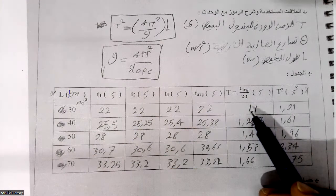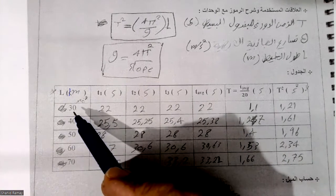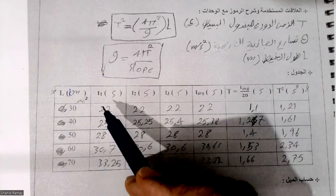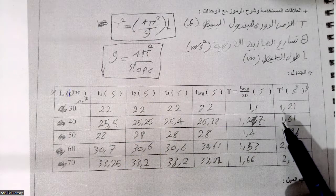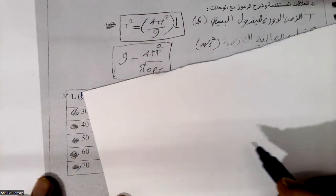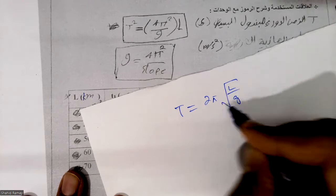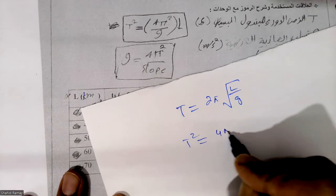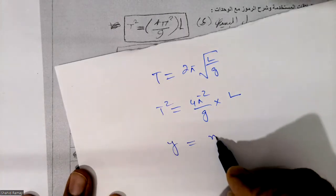We then take the square of the time period value. We are doing this because, according to theory, the formula for the simple pendulum is T = 2π√(l/g). When we square both sides it becomes T² = (4π²/g) × l. We compare this with the straight line equation y = mx + c, where c is zero.